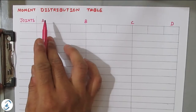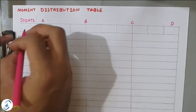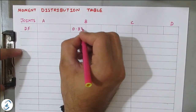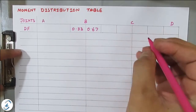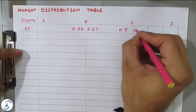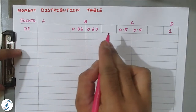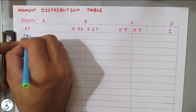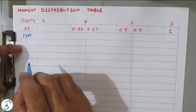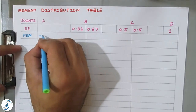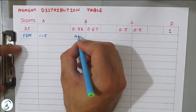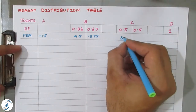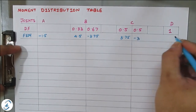The moment distribution table has joints A, B, C, D in the first row. Distribution factors row: BA = 0.33, BC = 0.67, CB = 0.5, CD = 0.5, DC = 1. Fixed end moments row: MF_AB = −1.5, MF_BA = 4.5, MF_BC = −3.75, MF_CB = 3.75, MF_CD = −3, MF_DC = +3.